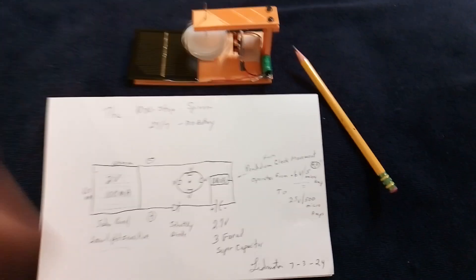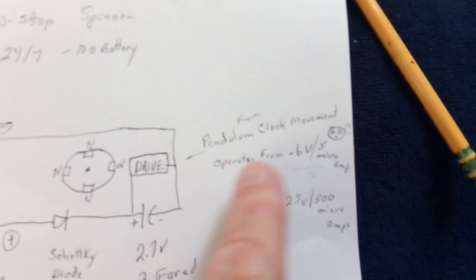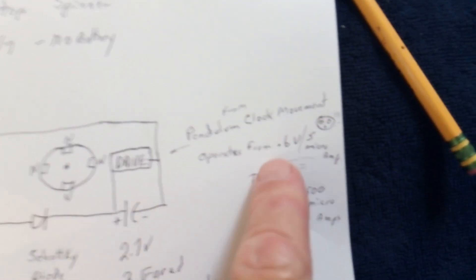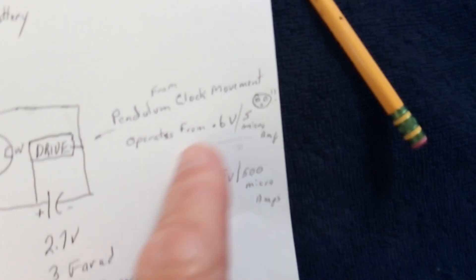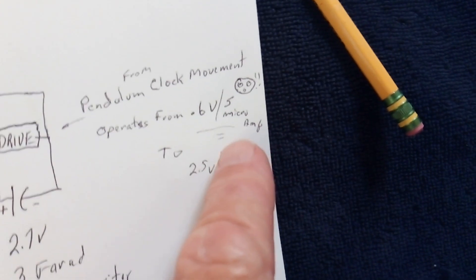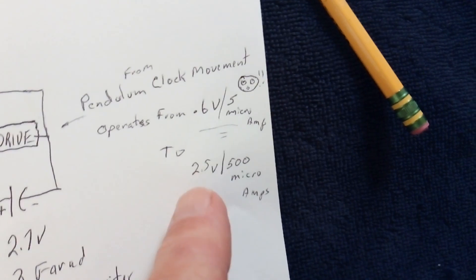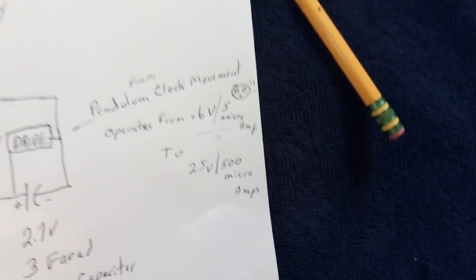Okay, I did some more work on this project that's using one of these pendulum clock movements. The experiments I did with it showed that it worked all the way down to 0.6 volts at 5 microamps and then it works all the way up to 2.5 volts at 500 microamps.